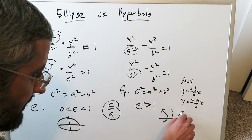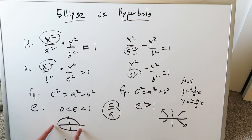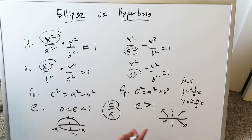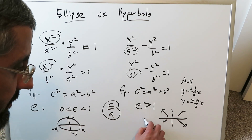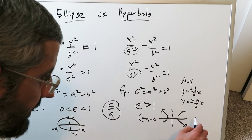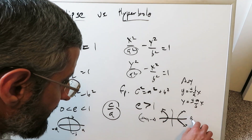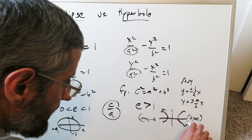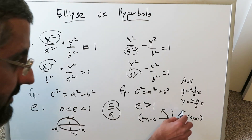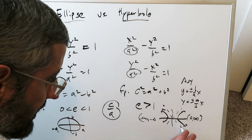Look at the domain — the domains will be slightly different. For the ellipse, the domains are very much defined: from minus a to a is your domain, and minus b to b is your range — a defined domain and range. For the hyperbola, your domain can be from minus infinity up to minus a at the vertex, then jump across from a up to positive infinity, and the range will be minus infinity to positive infinity.